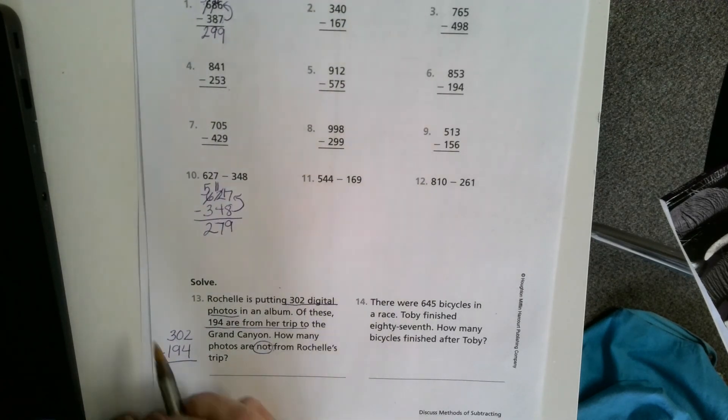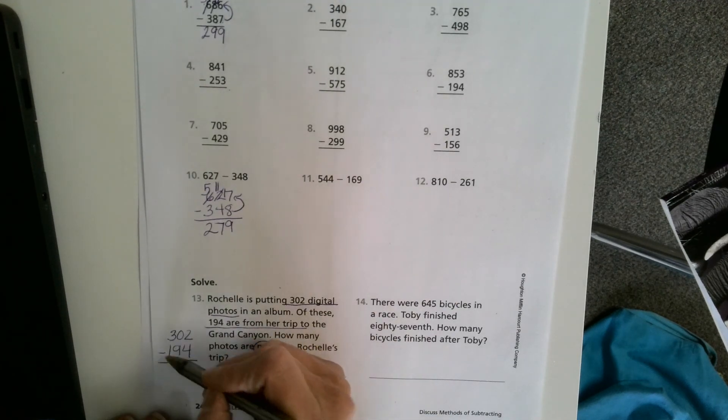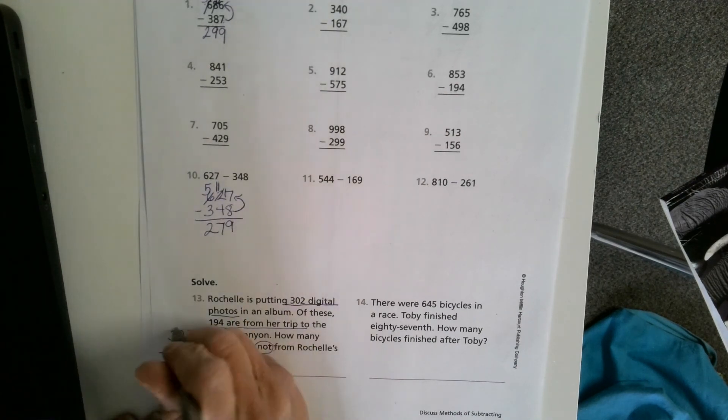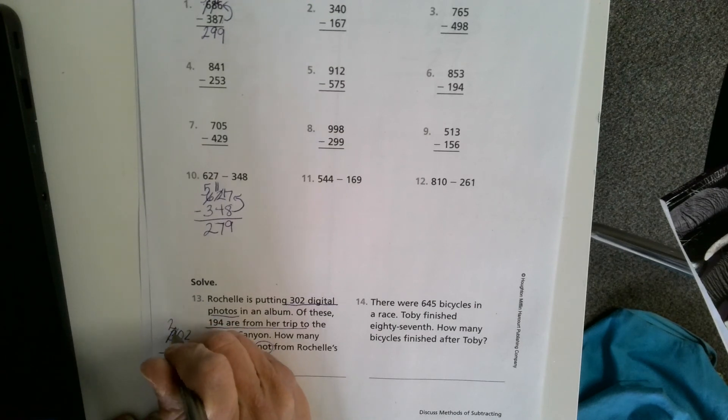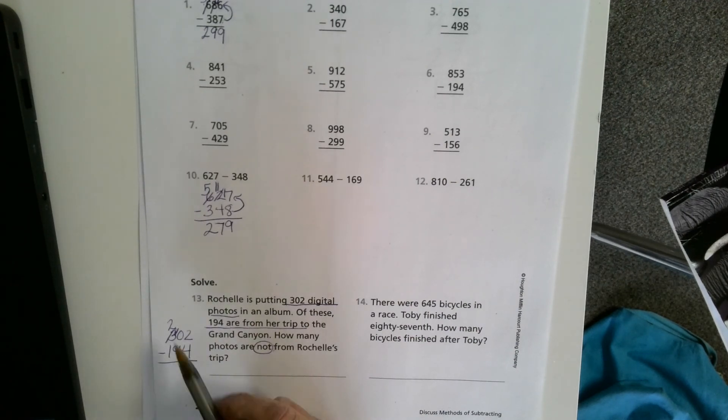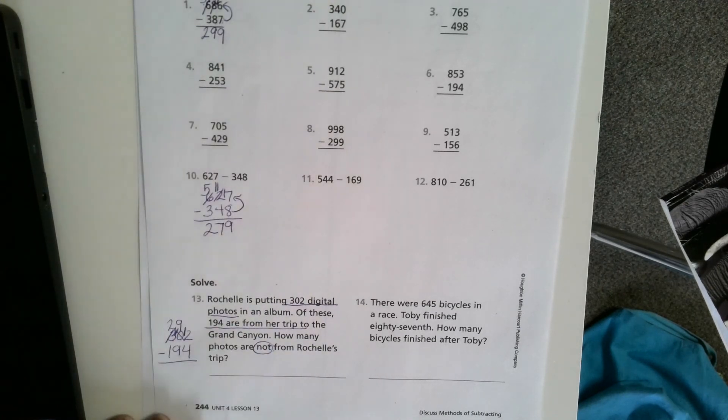I'm going to start ungrouping from the hundreds this time. 3 minus 1, I can do that because 3 is greater than 1. 0 minus 9, I can't do that. So I'm going to make a new group. Take away from that 3, put the 10 in the tens place. Now I can do 10 minus 9. But can I do 2 minus 4? Nope, because 2 is less than 4. So I have to get rid of that 10 that I just made, make that a 9, and put that 10 in the ones place. Now if I check, all of these can be done.